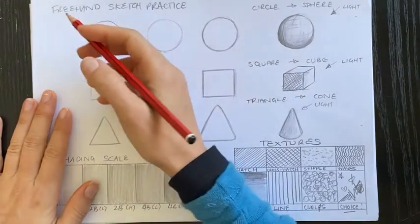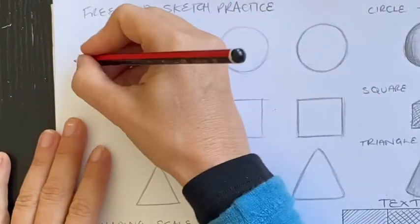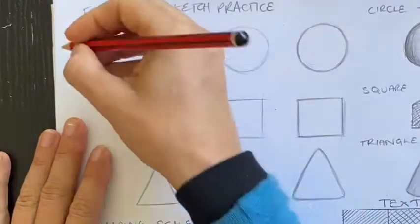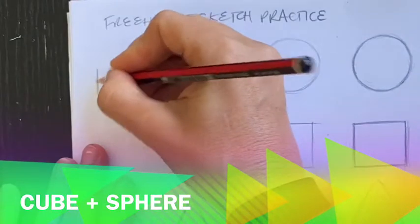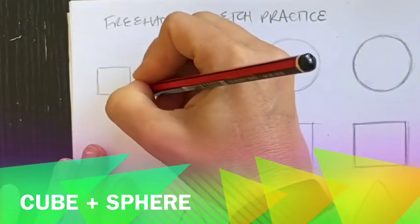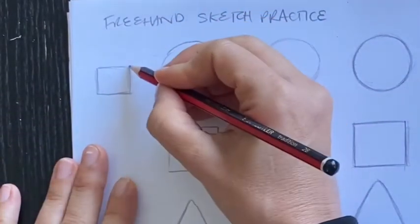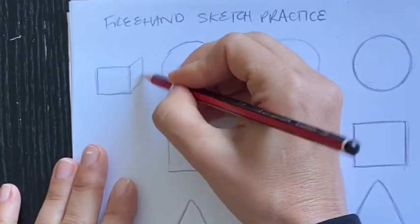So for example, I'm going to combine a circle and a cube. If I look back at my cube, I'm going to start here and I will draw a nice little sketch for the square. Remember my feathering technique.